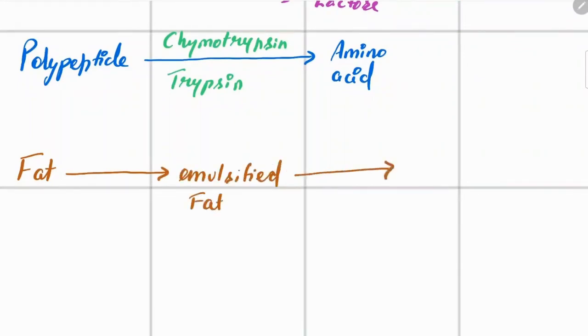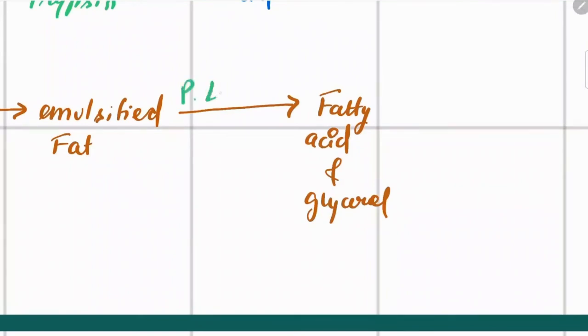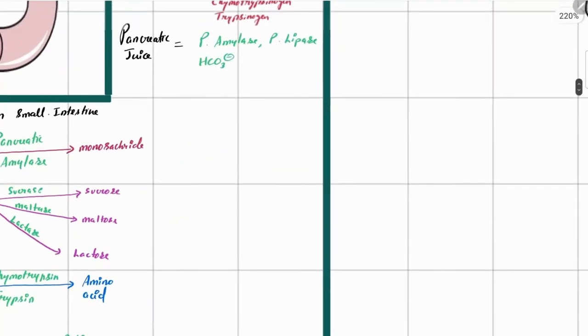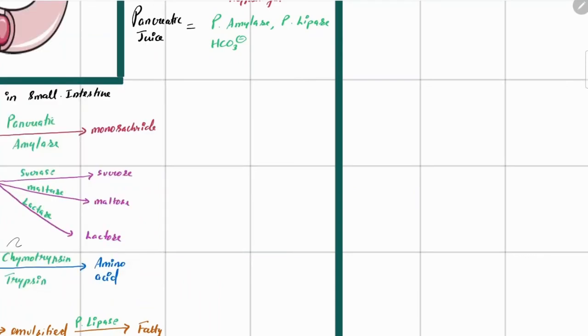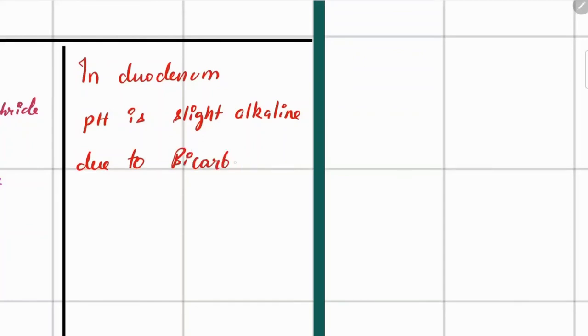Fats are emulsified by bile and then broken into fatty acids and glycerol. The emulsified fat is further broken down into fatty acids by the action of pancreatic lipase. In the duodenum the pH is slightly alkaline, since the mucosal layer is not as thick as in the stomach. The alkaline nature of the small intestine is due to the bicarbonate ions secreted by the pancreas.